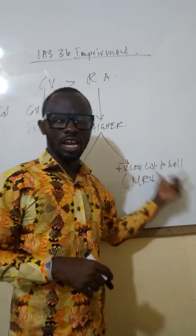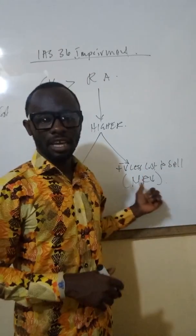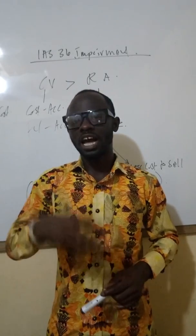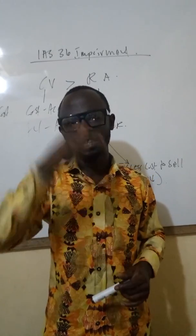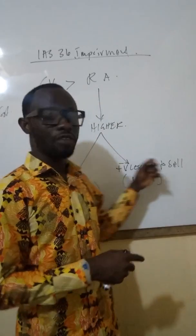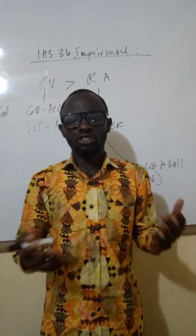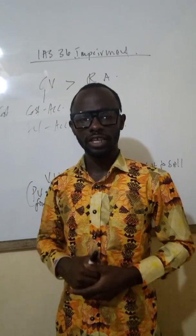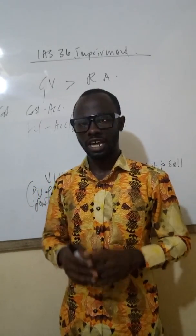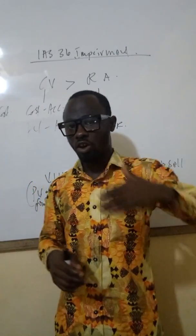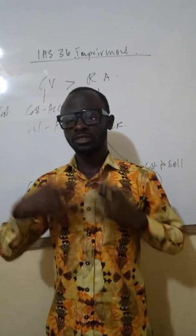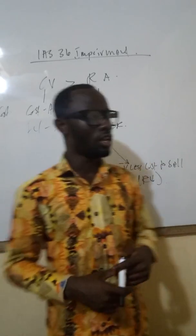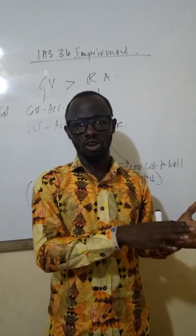Fair value less cost to sell is the same as net realizable value — it simply means how much money we can get if we sell the asset today. For example, if we sell the asset today for $10 million but incur selling costs of $3 million, then the fair value less cost to sell is $7 million.